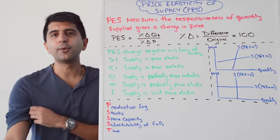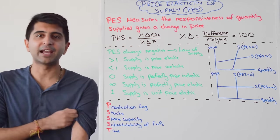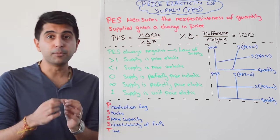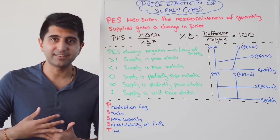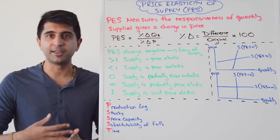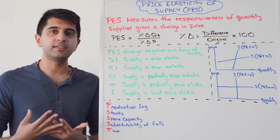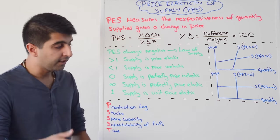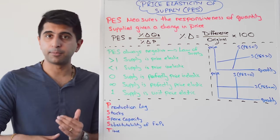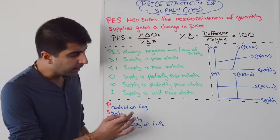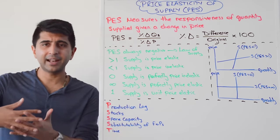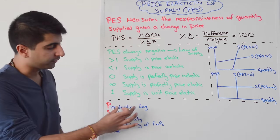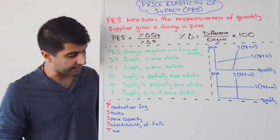The P stands for production lag. The longer the production lag for a good or service, the more price inelastic supply is going to be — it's very hard to respond by increasing production if there is a long production lag when the price or demand goes up. Whereas if the production lag is very short, it's easy to increase production, so supply is more price elastic.